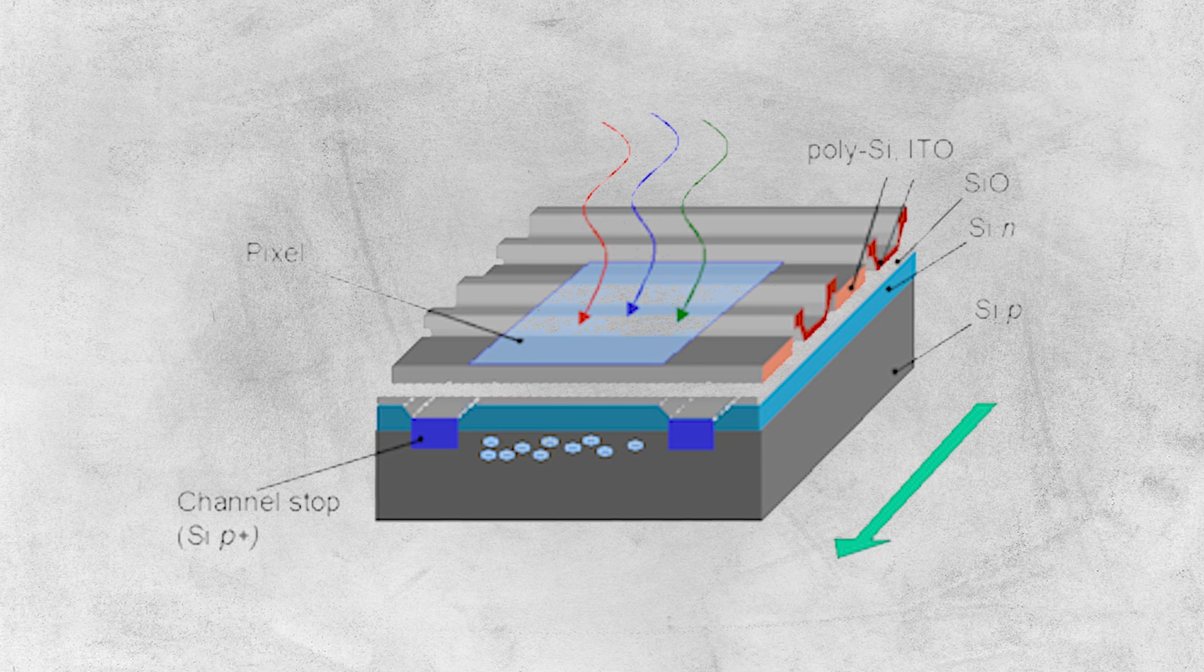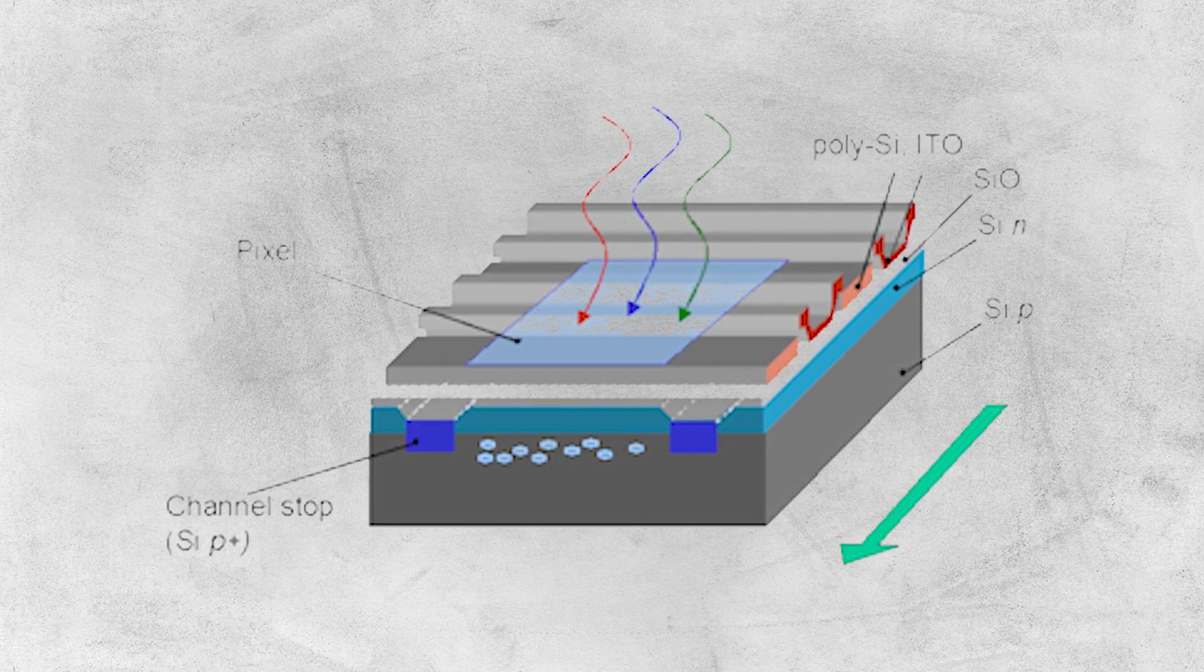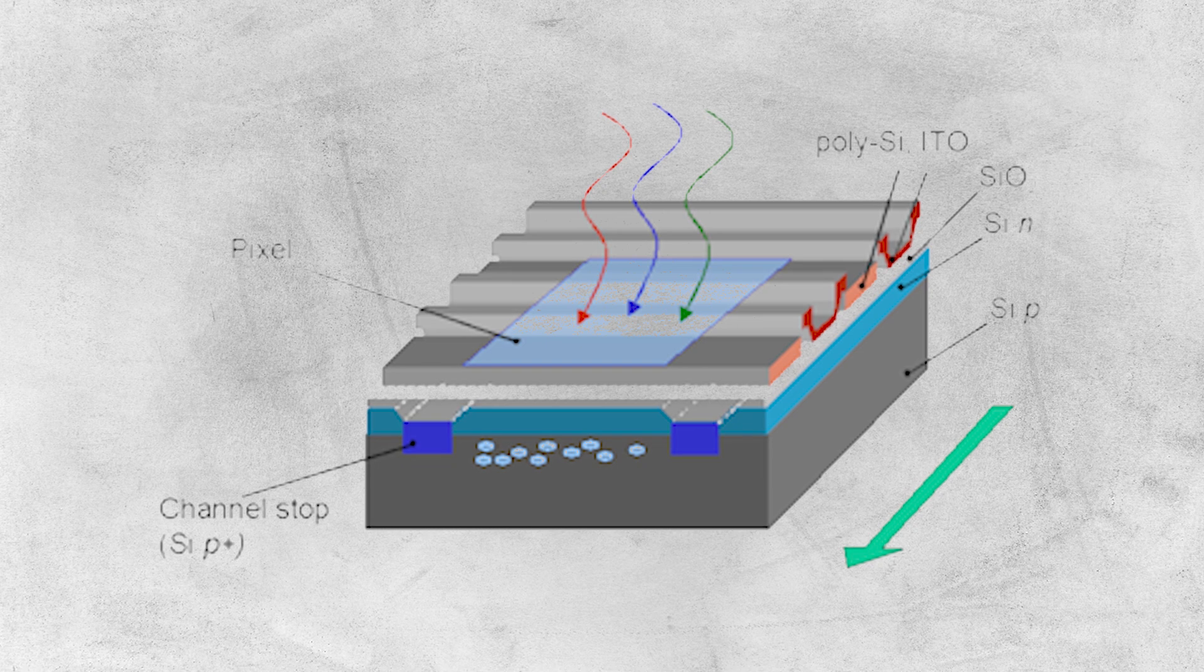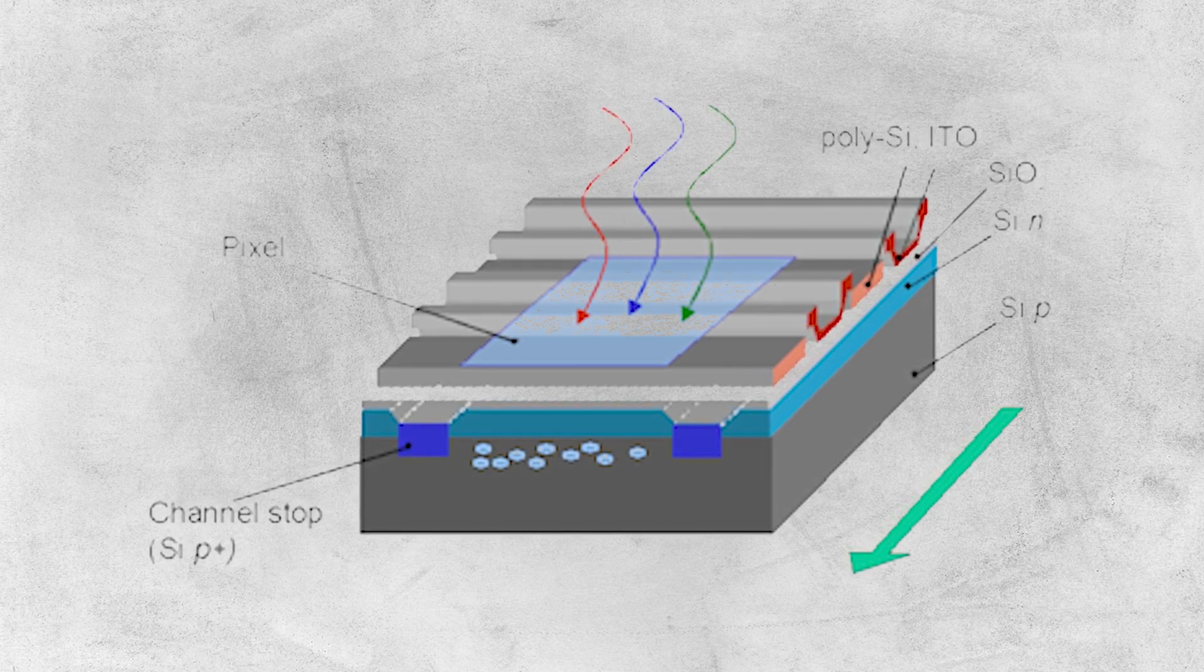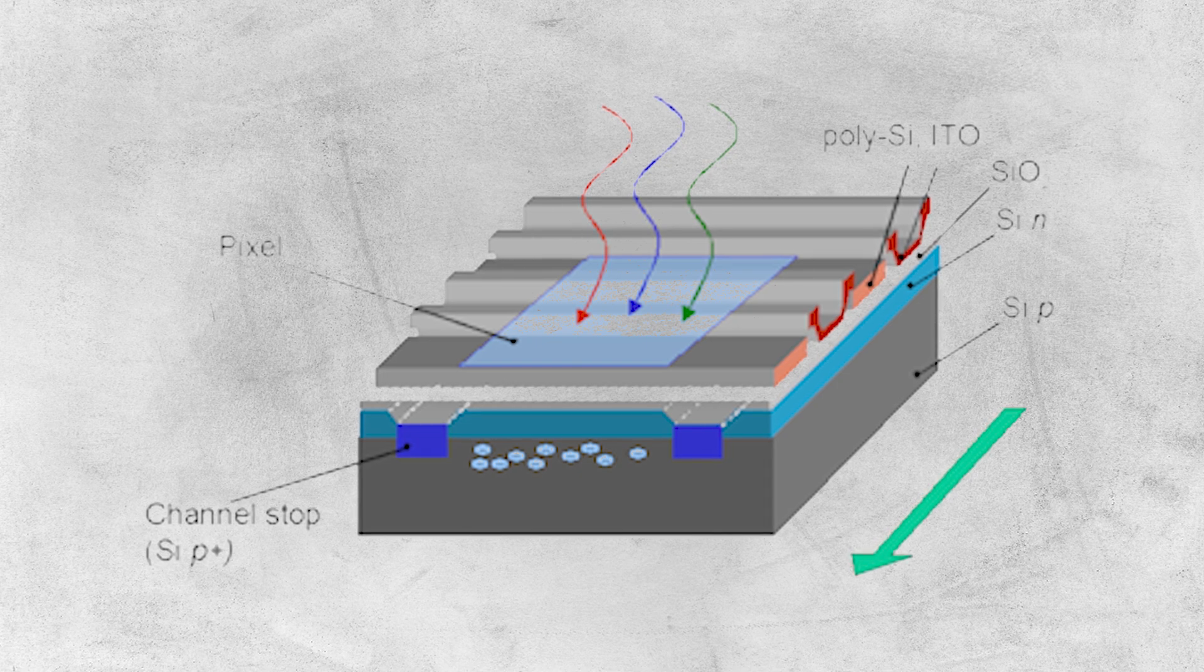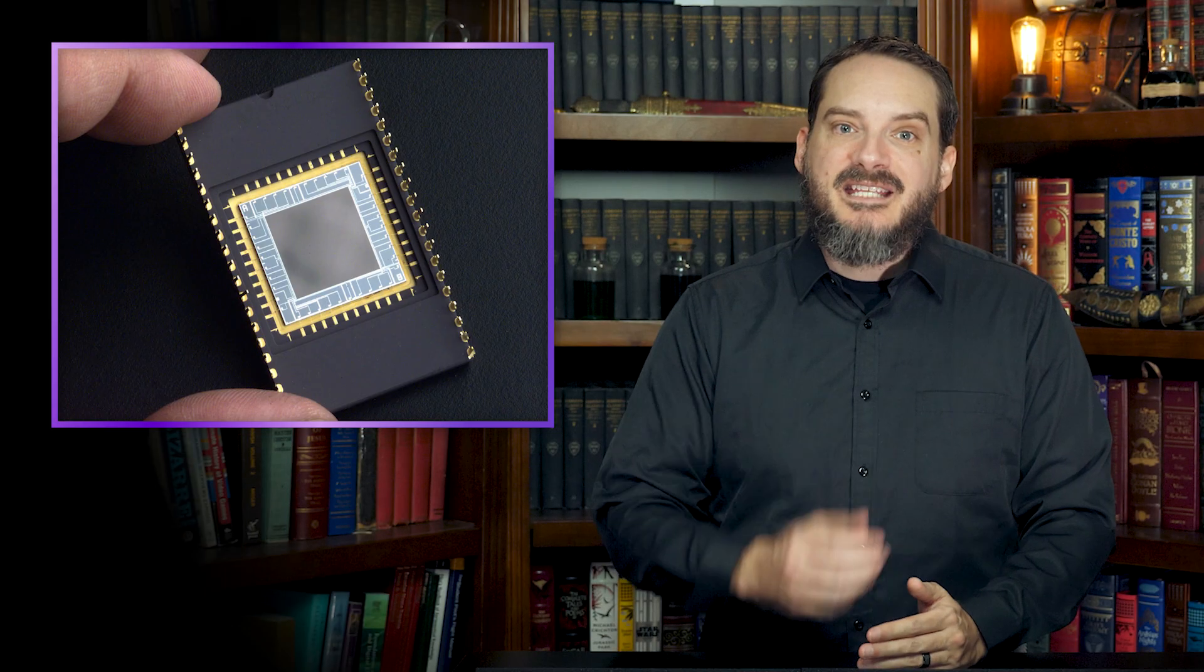Once the image is captured, the CCD control circuit commands each capacitor to pass its charge onto its neighbor, bucket brigade style, until it reaches the output wires at the edge of the array. This amplified charge is then measured and stored by an image processing unit. By repeating this process with all the capacitors in the array, a full image can be built up digitally.